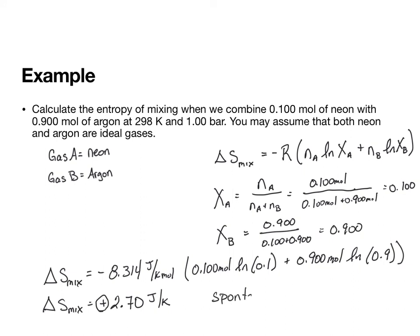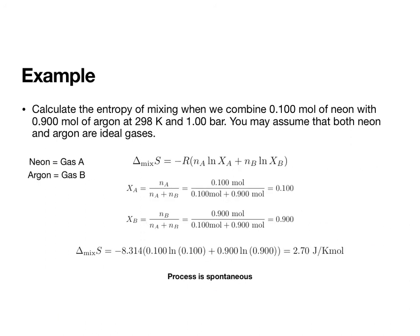The delta S is positive. And so this process is spontaneous. Meaning that this is what we would expect. If we have two things that are separated and we remove the barrier, we expect them to mix. This is the same thing that happens if we have a glass of water and we put in some drops of food coloring. Those drops of food coloring are not going to stay as drops on top of the water. Instead, they are going to mix and incorporate and maximize their entropy. It's a spontaneous process. No work has to be done. Okay, and I realized as I was going through this that I have my units wrong. This answer should just be joules per Kelvin.